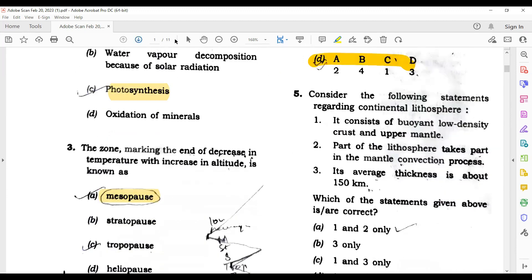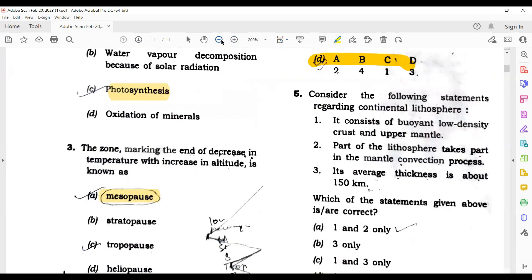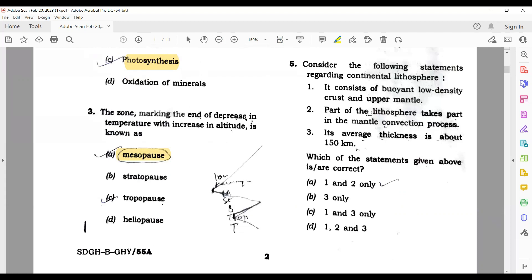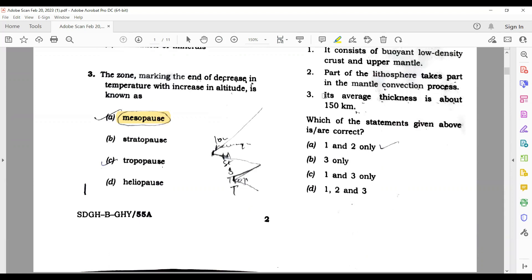Consider the following statements regarding continental lithosphere. The first option is it consists of buoyant low density crust and upper mantle. This is wrong. Why? Because lithosphere is made up of upper part of the upper mantle, not entirely made of the upper mantle. So first is wrong. Second - part of the lithosphere takes part in the mantle convection process. This is again wrong. Third - its average thickness is about 150 km. This is correct. So correct option is B only.